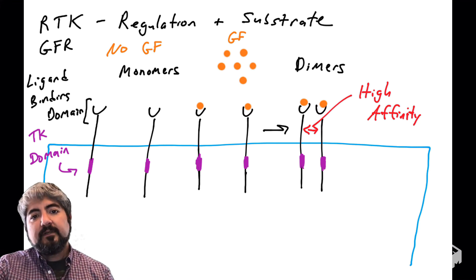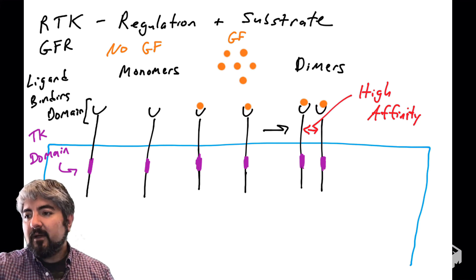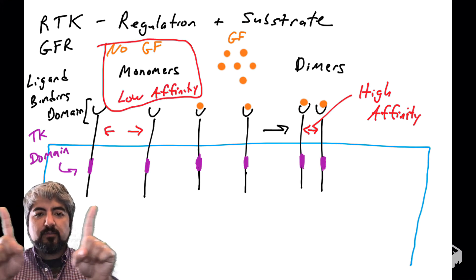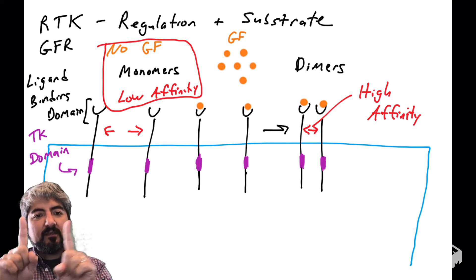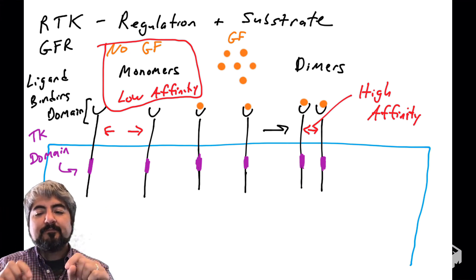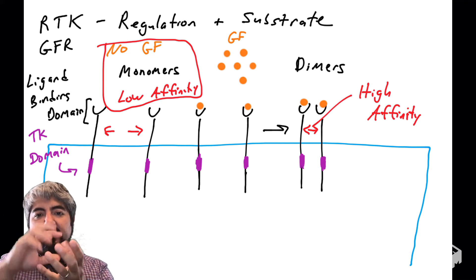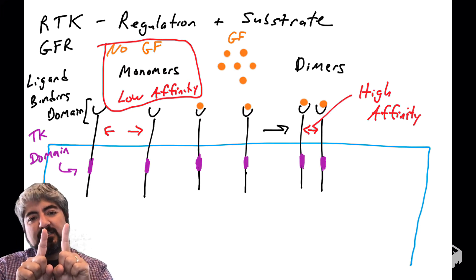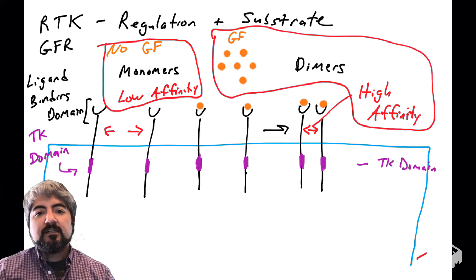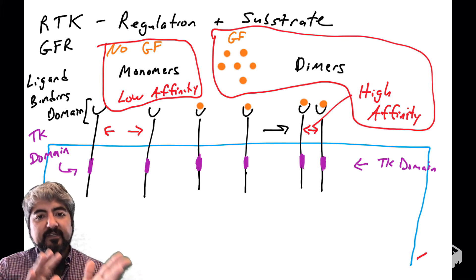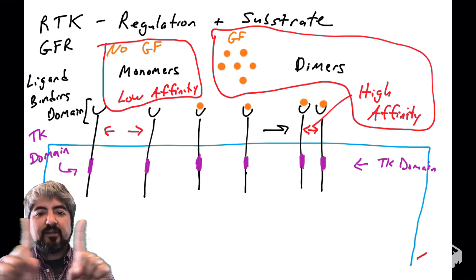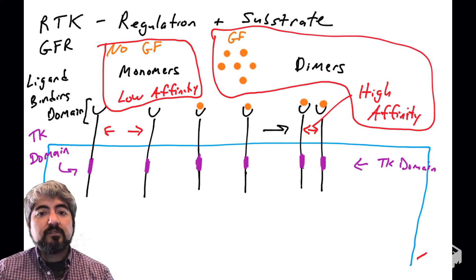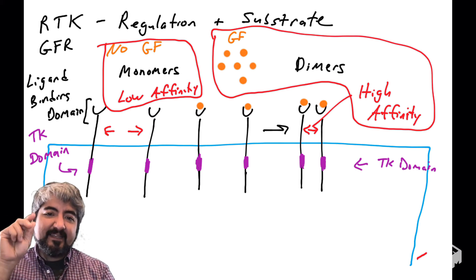When the receptors encounter one another after growth factor binding, they have high affinity for one another, so they form what we call a dimer. Before, in the absence of growth factor, they had low affinity and existed as monomers floating in the plasma membrane. Growth factor changes the 3D conformation of the receptor, so when they encounter each other they bind with high affinity — this triggers dimerization, a very important term.